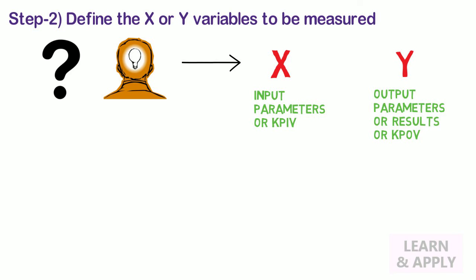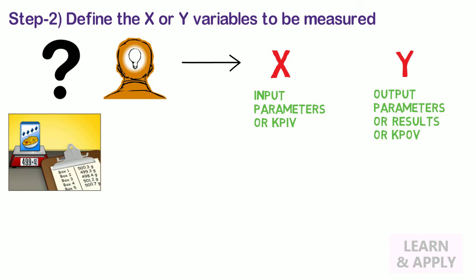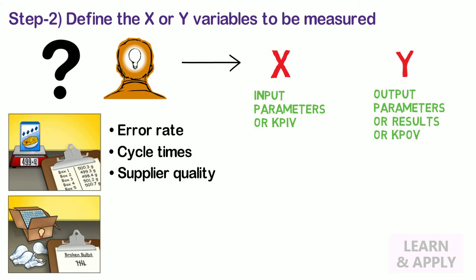For example, we distinguish measurement categories for variables as error rate, cycle times, or supplier quality, and attributes such as line, product, or weekday.